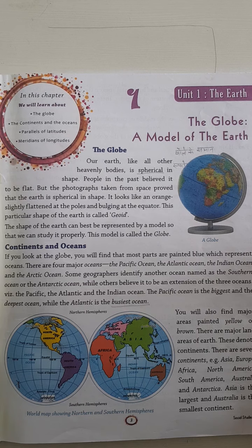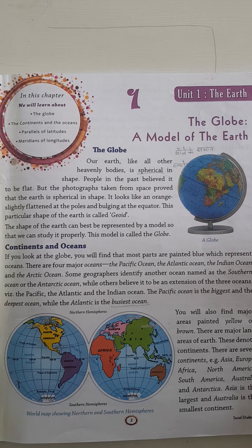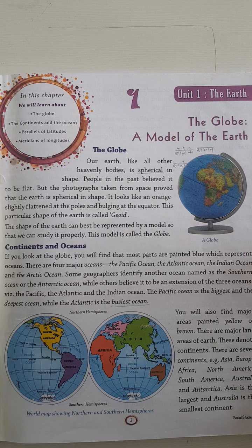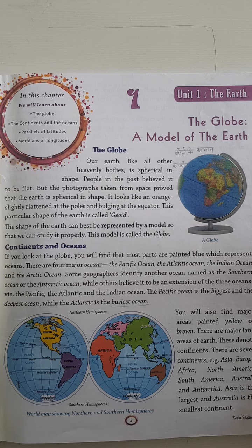It looks like an orange, slightly flattened at the poles and bulging at the equator. The earth is like an orange, but at the poles — north and south — it is flat. Otherwise it is spherical.